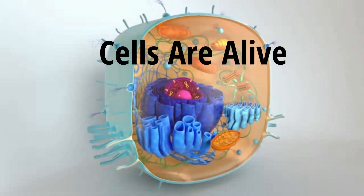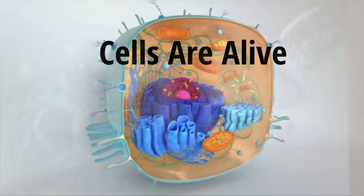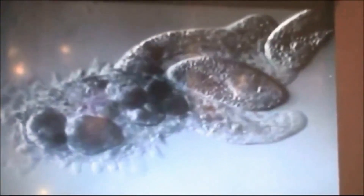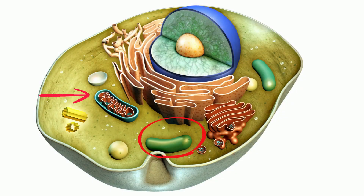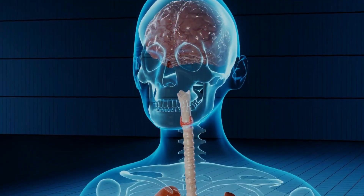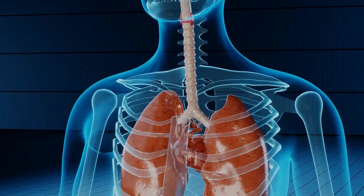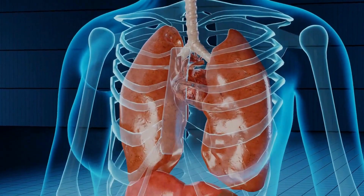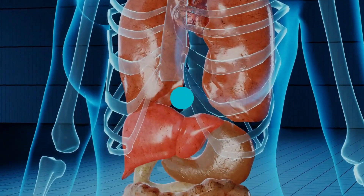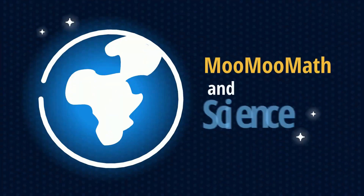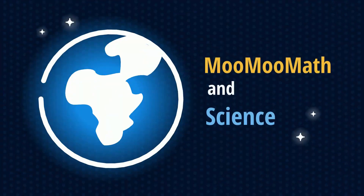Cells are alive, as you can see in this video of a single cell protist. In order to stay alive, cells have organelles that work together. These organelles are similar to our own organs that work together to keep us alive. Welcome to Moo Moo Math and Science and the Organelles of a Cell.